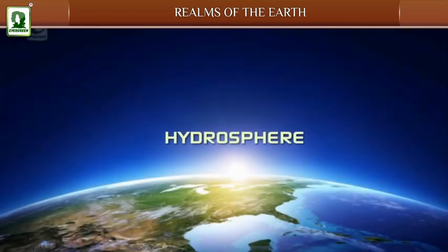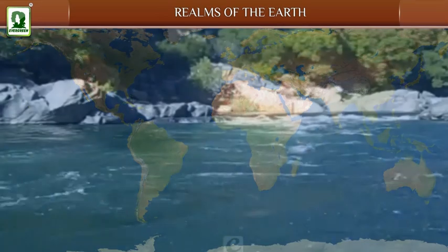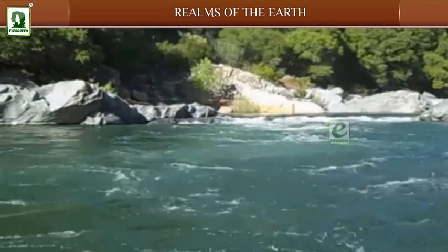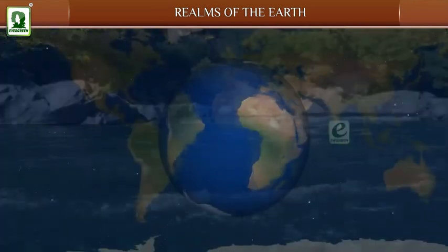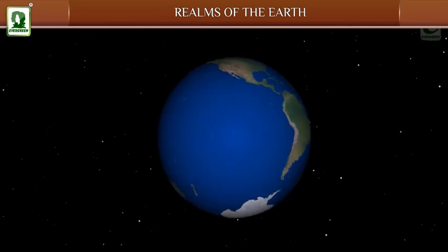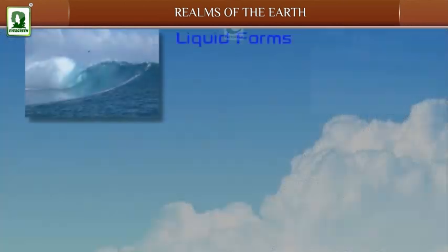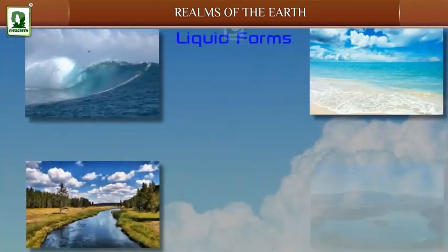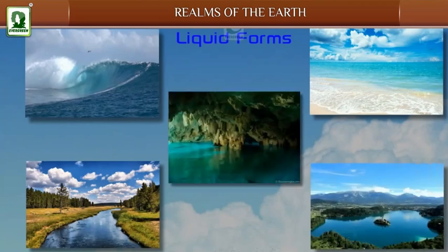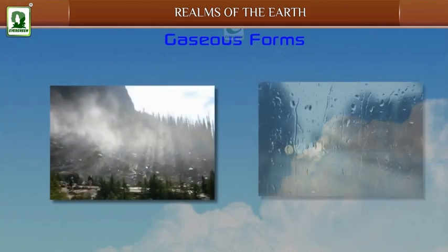Hydrosphere: The hydrosphere is the world of water that surrounds all of us. Anything related to water is part of the hydrosphere. It includes all the water on the earth in any form — solid form such as snow and glaciers; liquid forms such as oceans, seas, rivers, lakes, and underground water; and gaseous form such as vapours and moisture in the atmosphere.